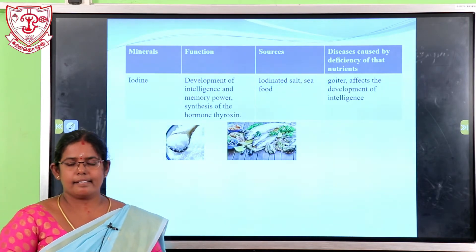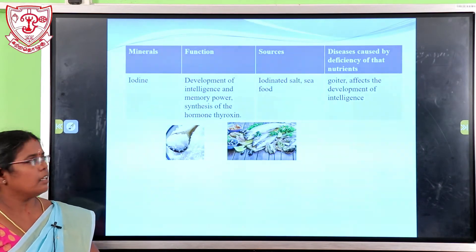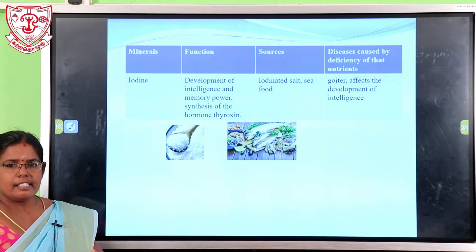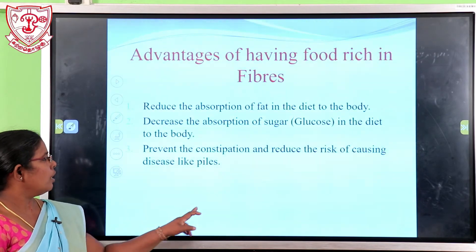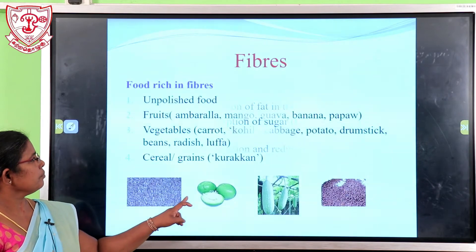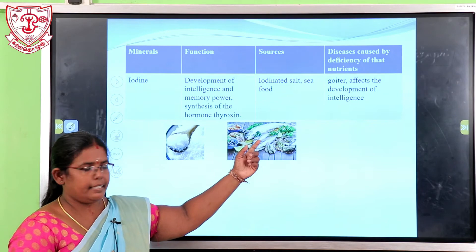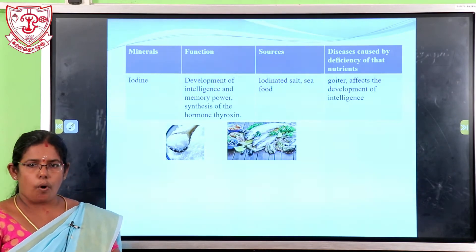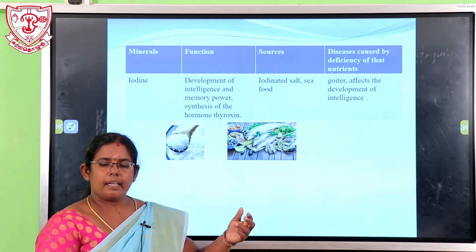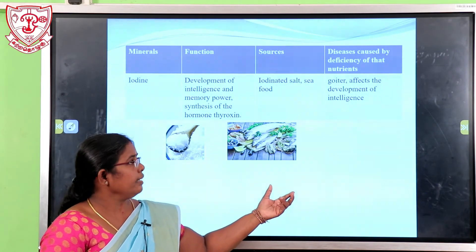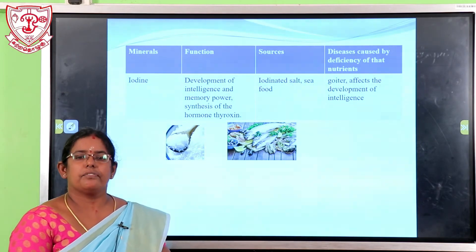The last mineral is iodine. The function of iodine is the development of intelligence and memory power, and synthesis of hormones. Sources of iodine include iodized salt and seafood. Deficiency of iodine causes goitre and affects the development of intelligence.